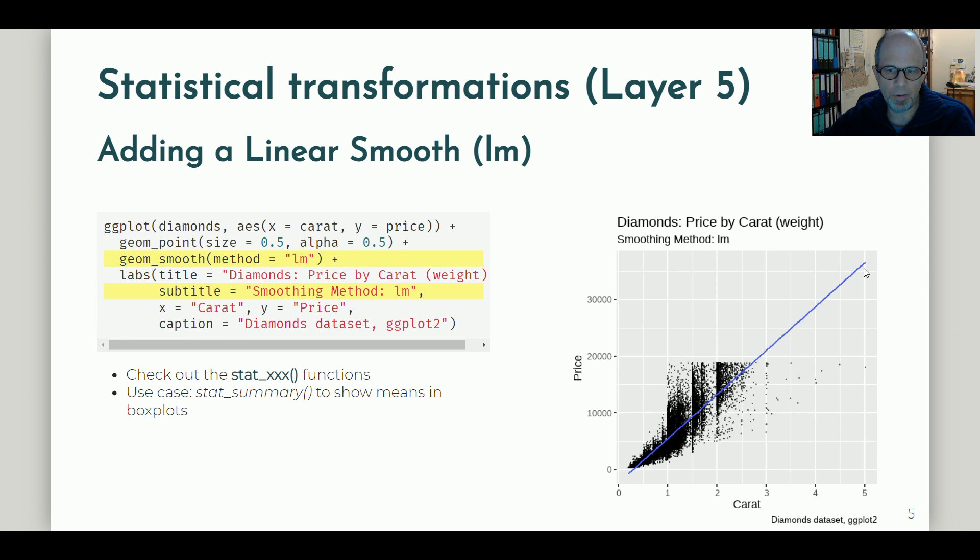The line extrapolates far beyond the range of valid data points. So at least for higher levels of carat, the linear trend doesn't seem appropriate. We'll pick up on that and improve that in a minute.